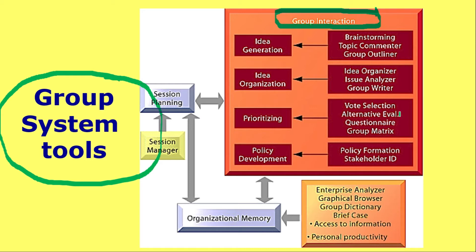Then prioritizing — deciding which ideas get top priority and which get middle or last priority. For this, vote selection, alternative evaluation, question hires, and group metrics are multiple methods used, which are the procedures discussed in the previous lecture as the fourth component of GDSS. Then policy formation and stakeholder identification mean finalizing the policies and stakeholders of a particular project — that is called policy development, which is part of group interaction.